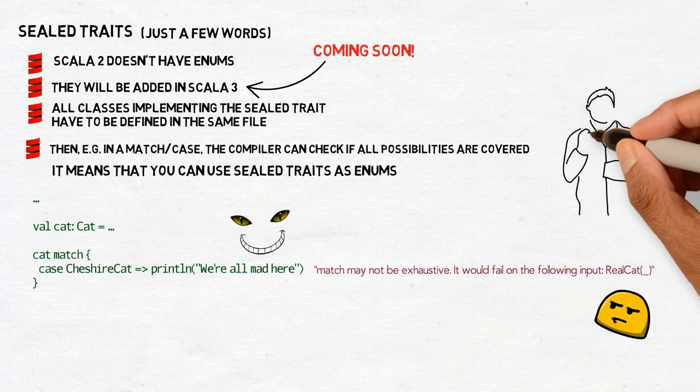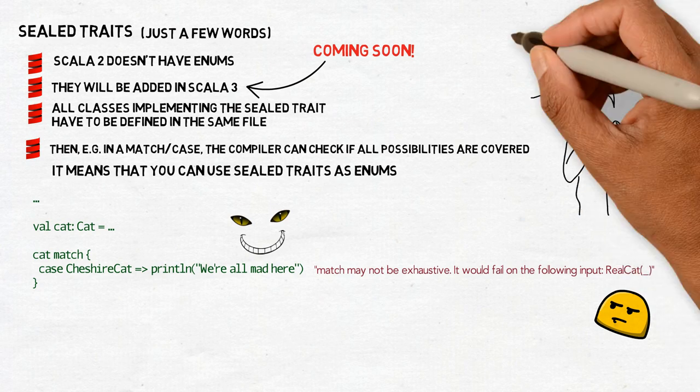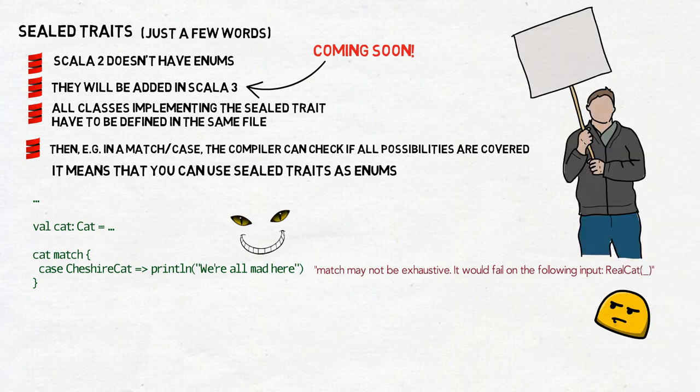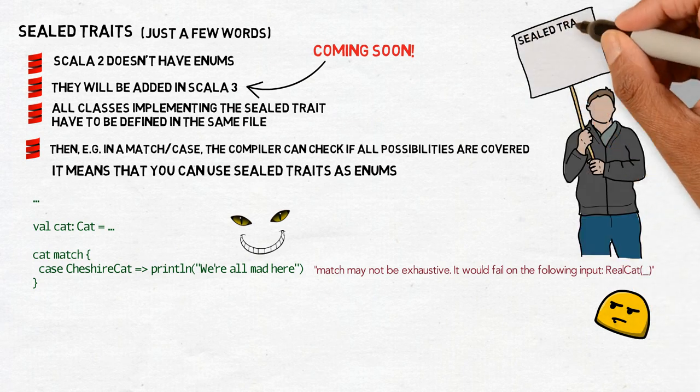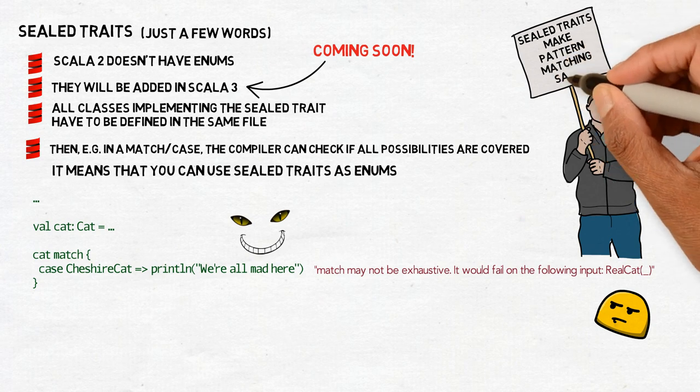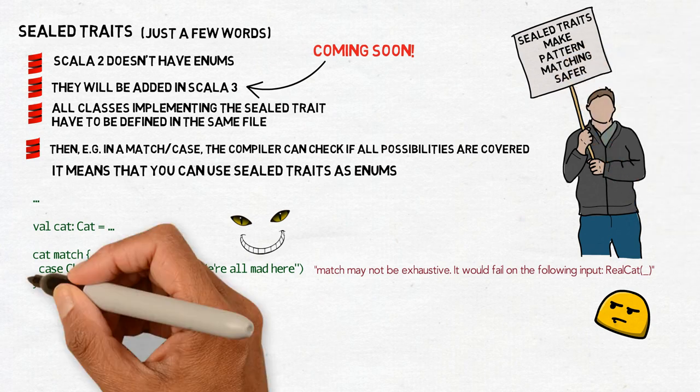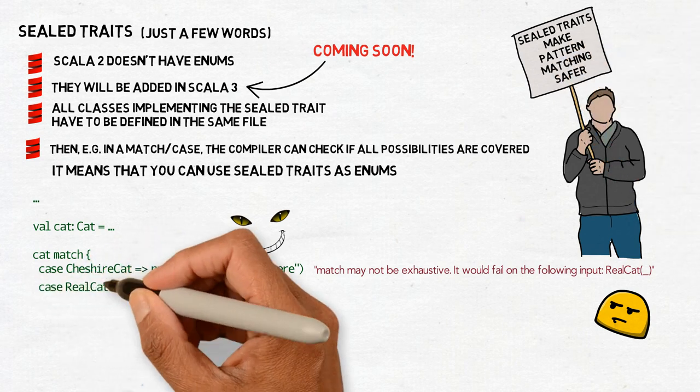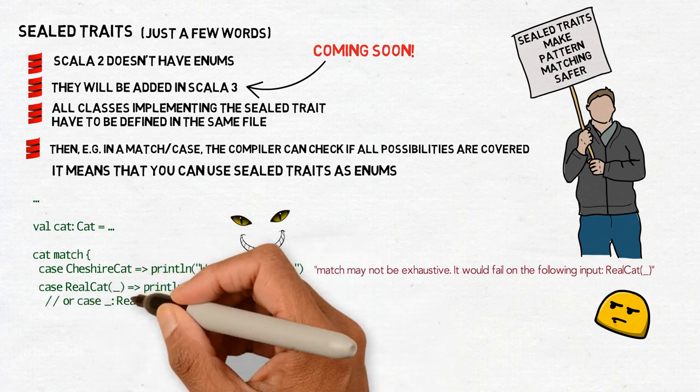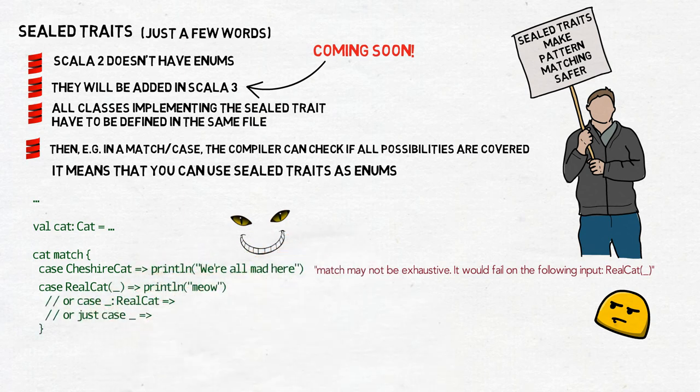It is possible that you really wanted to write a match case which does not cover all possible subtypes, but it's highly unlikely. It's more possible that this is a mistake and using sealed traits is a way to prevent it from happening. Just add one more line. Like this. And it will do the trick.